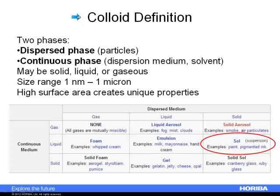Should we talk about colloidal gold or gold nanoparticles? It really depends on a few things: the size, your academic background, and which definition you prefer. Traditionally, a colloid is a two-phase system — you have the continuous phase, which could be water, and the dispersed phase, in this case the gold nanoparticles. To qualify as a colloid, the dispersed particles would be in the size range between a nanometer and a micron. Since these are very small particles, they have a very high surface area and exhibit some unique properties — that's why we study them.